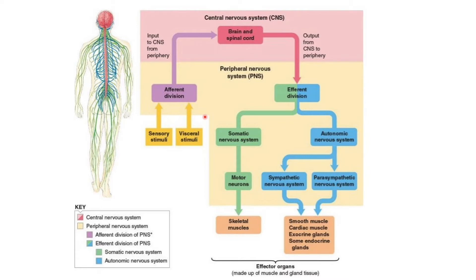The nervous system has an input division and an output division. Input goes to the CNS, which figures out what's going on and comes up with a resolution to output. The input area is called the afferent division and the output is the efferent division — be sure to remember those terms as they will definitely come up on your tests and exams.